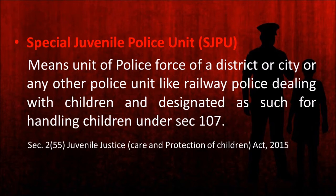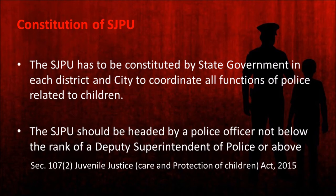The second special authority established under the Juvenile Justice Act of 2015 is the Special Juvenile Police Unit. This is a unit of the police force of a district or city, or any other police unit like railway police, dealing with children and designated for handling cases relating to children. The Special Juvenile Police Unit is also constituted under Section 107 of the Act, and has to be constituted by the state government in each district and city. Its main function is to coordinate all the functions of police related to children, and it must be headed by a police officer not below the rank of Deputy Superintendent of Police.